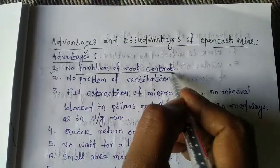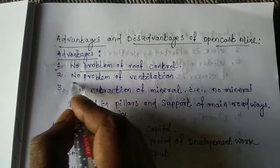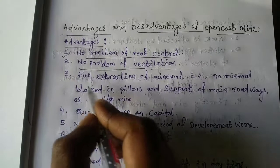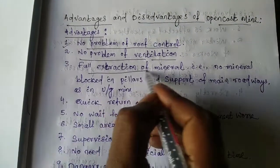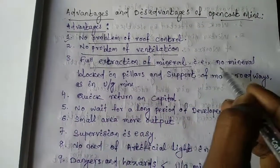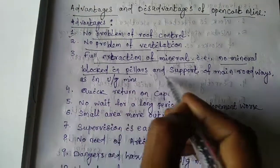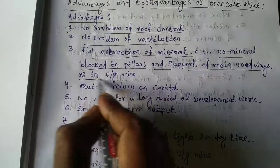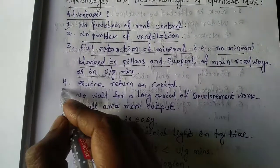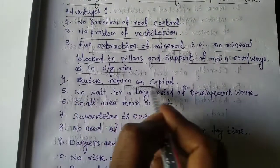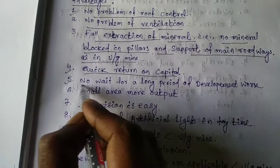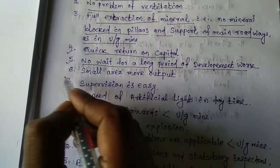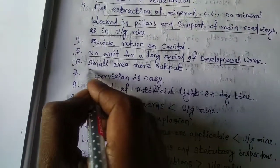First, no problem of roof control in opencast mine. Second, no problem of ventilation in opencast mine. Third, full extraction of mineral — that is, no mineral blocked in pillars and support of main roadways as in underground mine. Fourth, quick return on capital.